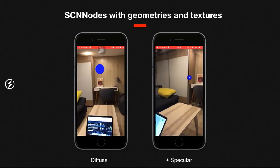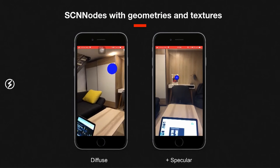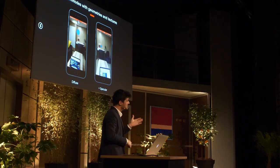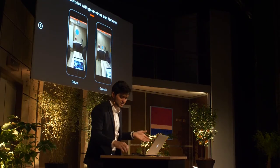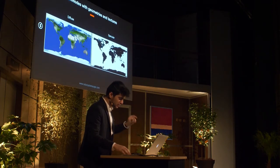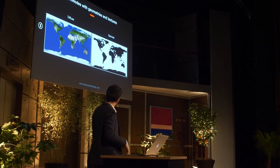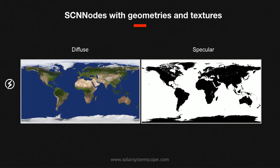With specular alone, you can see a little bit of a three-dimensional effect, but it's still not the experience we want to achieve. So I went to a website called solarsystemscope.com and downloaded two textures — one diffuse and one specular.